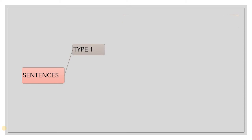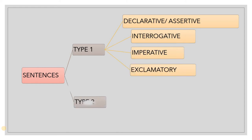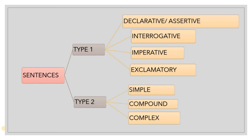Sentences are of two types. Type 1 includes declarative or assertive, interrogative, imperative, and exclamatory. Type 2 is simple, compound, and complex. These are the two types of sentences we have, with their respective subtypes.